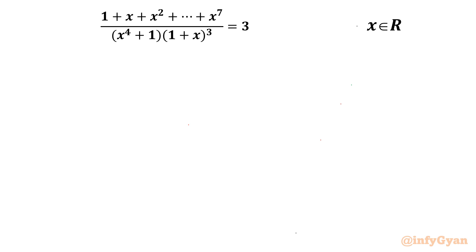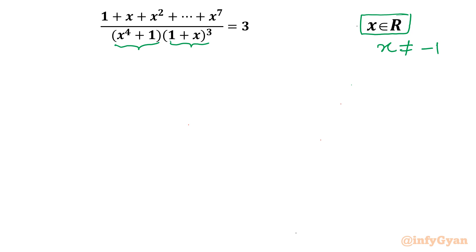We have to find out real values of x. Let's get started by writing the domain of the equation. The denominator cannot be 0, so x cannot be equal to negative 1. Also, x⁴ cannot be negative for real values of x, so there is no constraint for the first bracket.